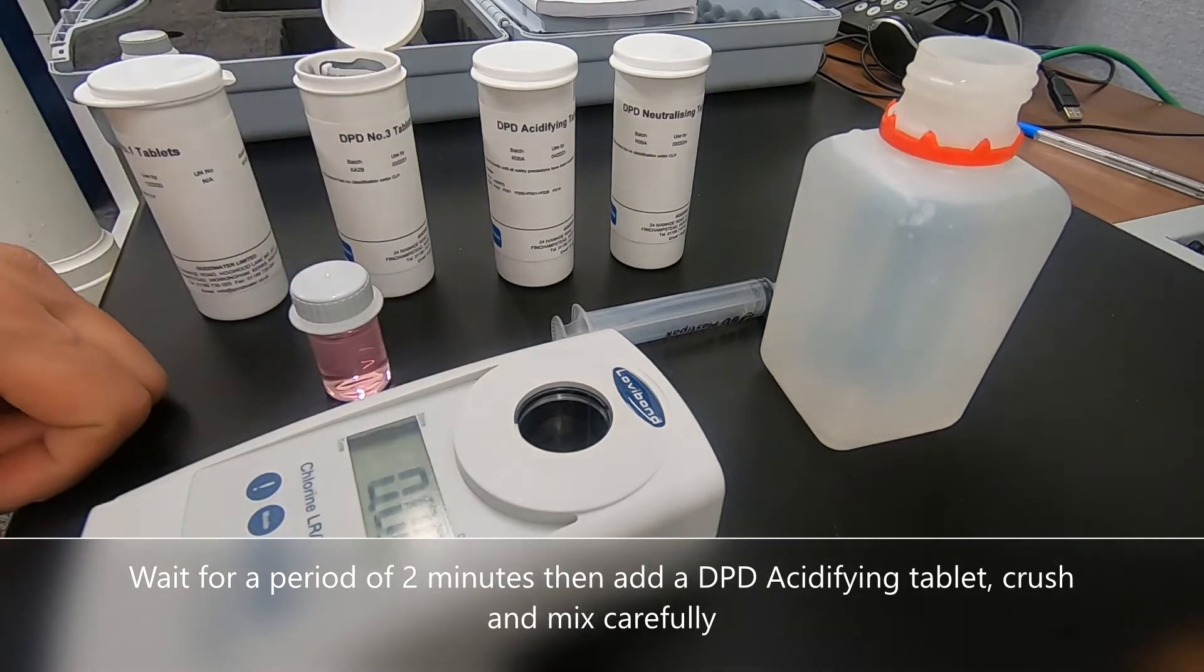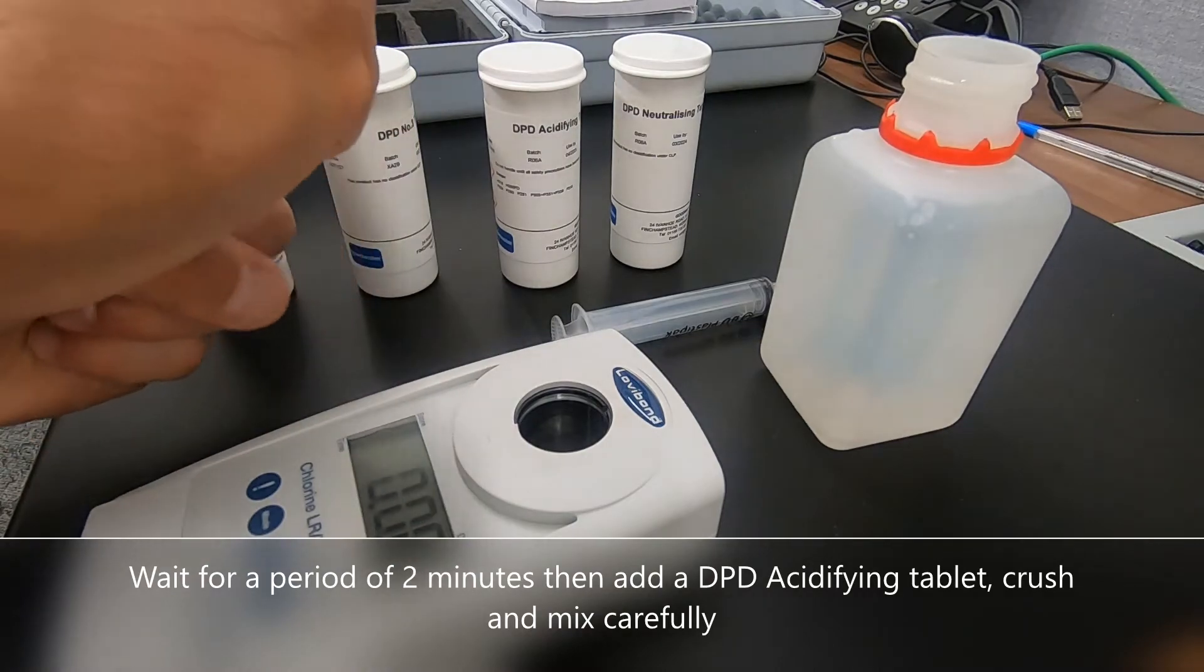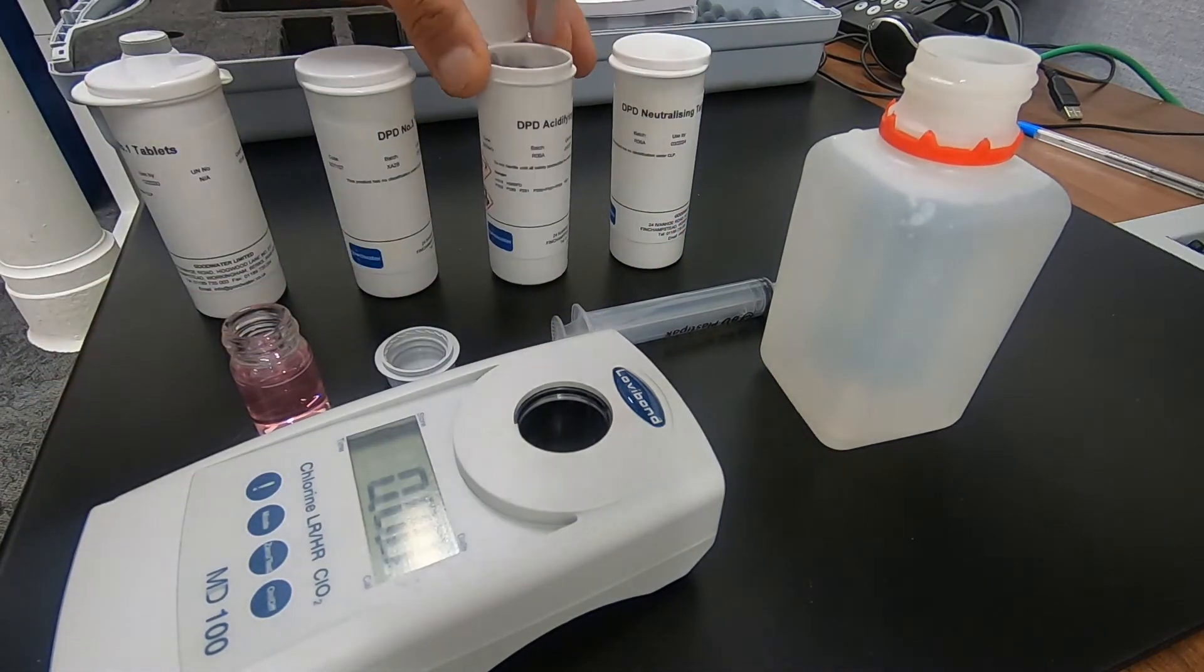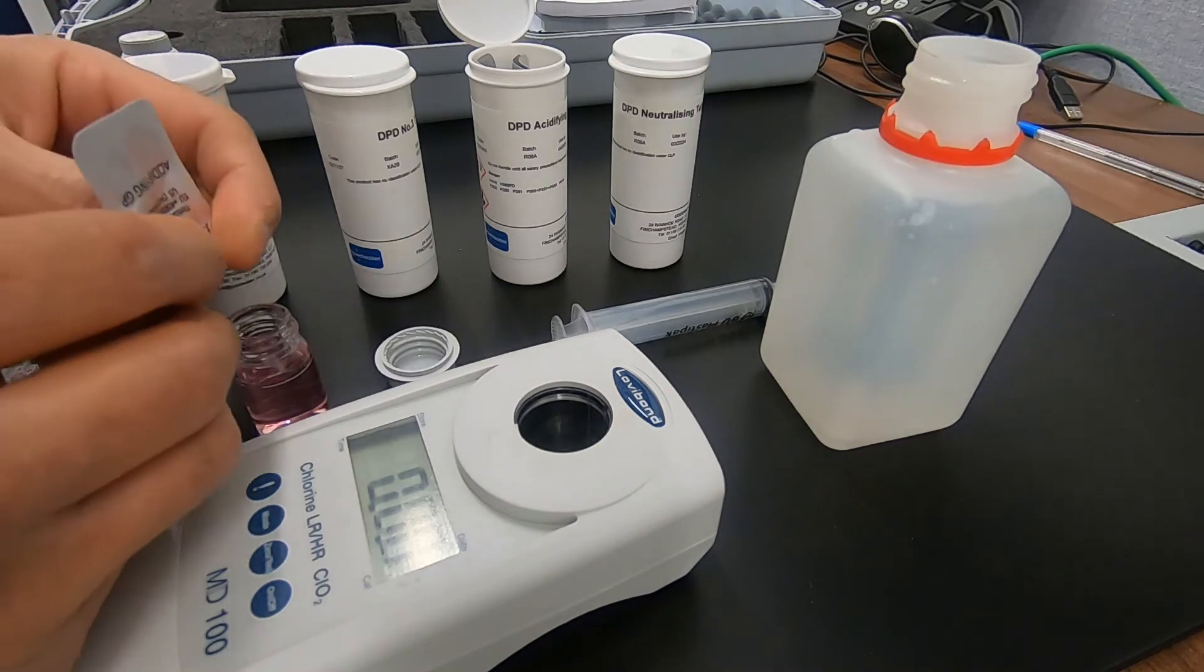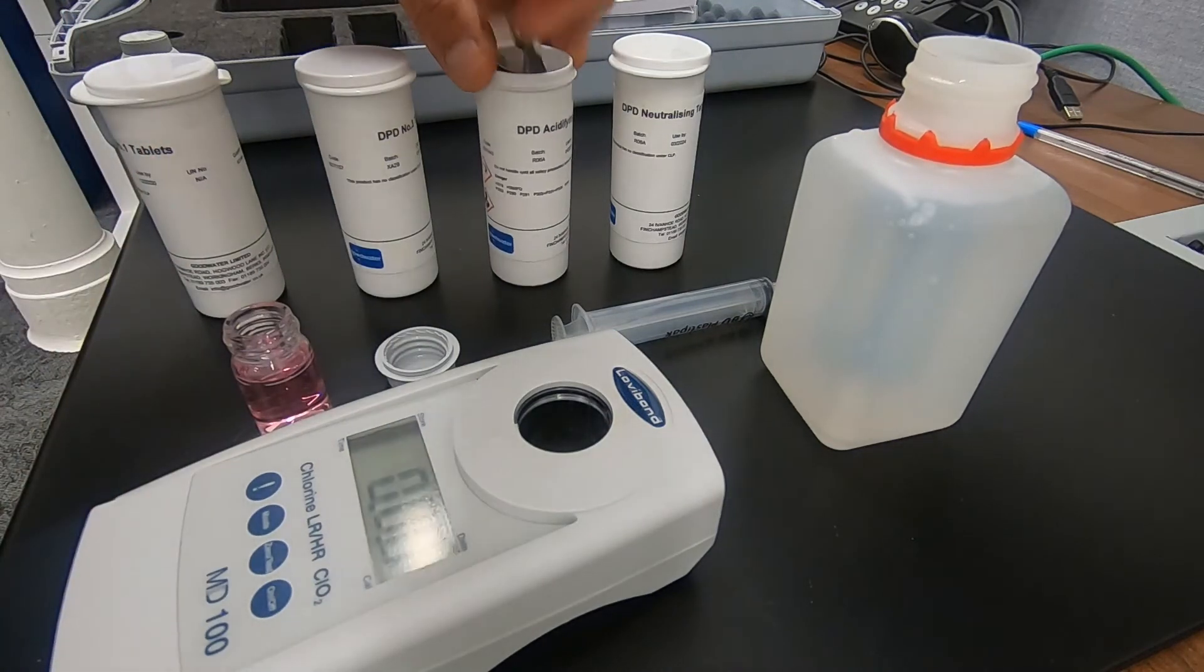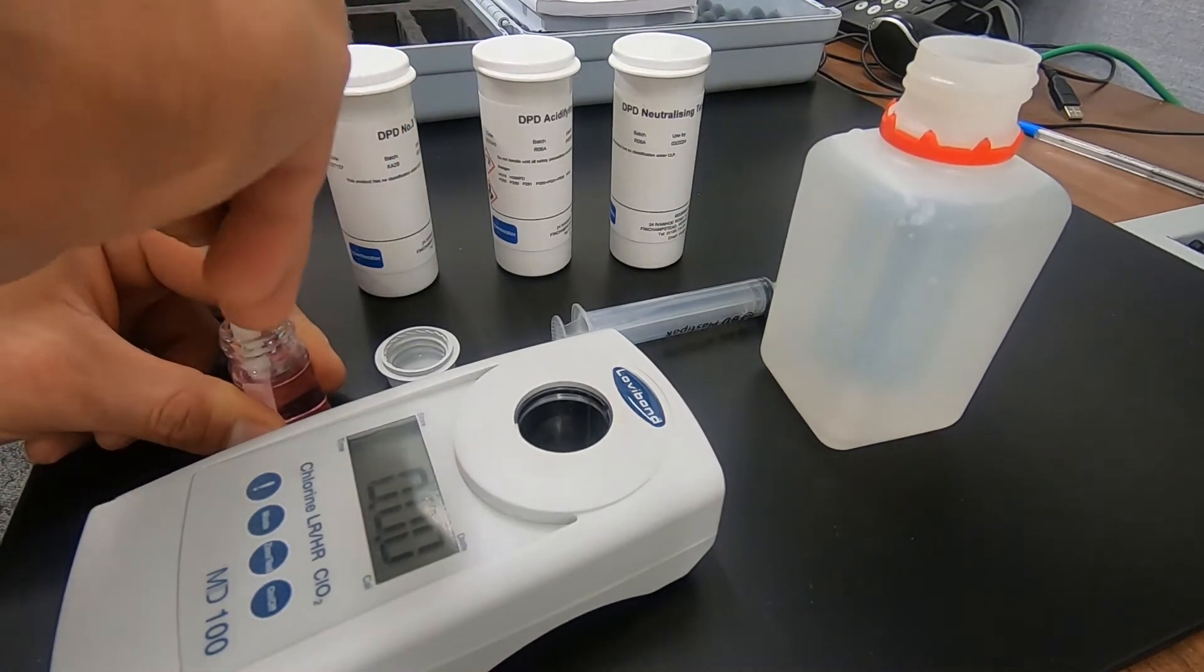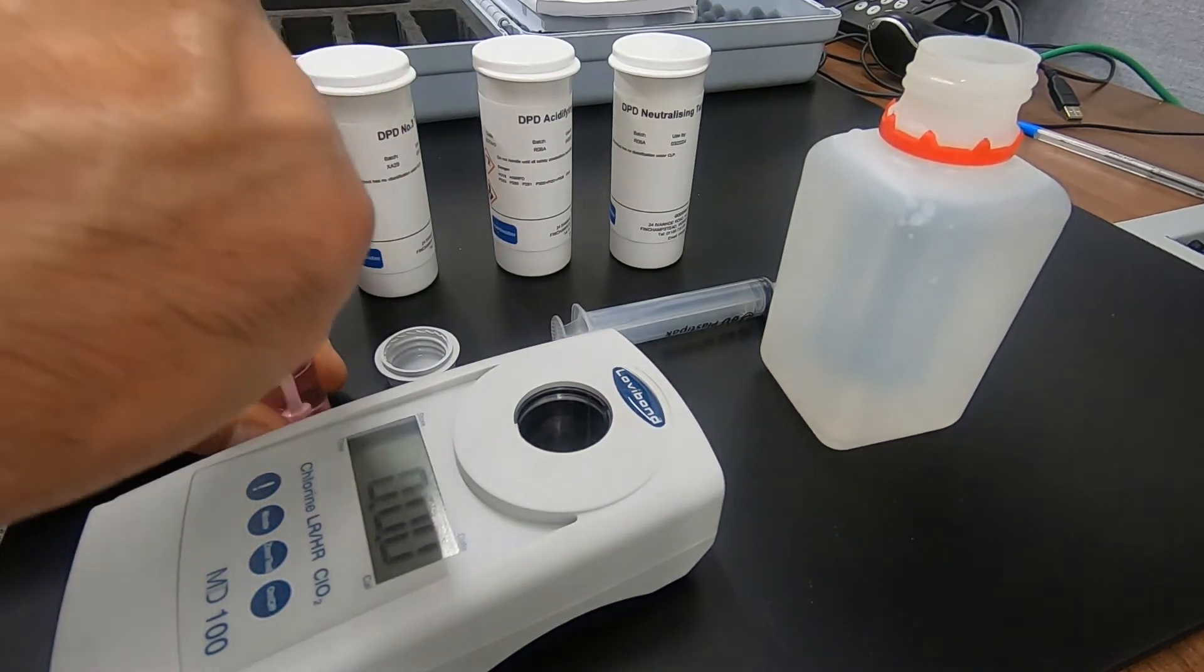At the end of the two minute period we take our next tablet which is the acidifying tablet. So we open up the vial again. In the same way pop the tablet directly into the cell. Get our crushing rod again. Do the same thing, crush that tablet gently so as not to create any air bubbles.